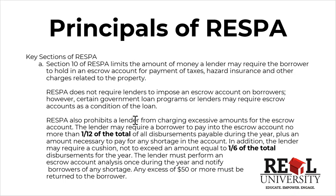Section 10 of RESPA deals with escrow accounts. RESPA does not require lenders to have an impound account — that's a key point. RESPA doesn't say a lender has to have an escrow account. The loan that has been chosen by the borrower or the lending company will determine if there is an escrow or impound account. RESPA only regulates if there is one — then these are the rules. Section 10 does not require impound accounts.